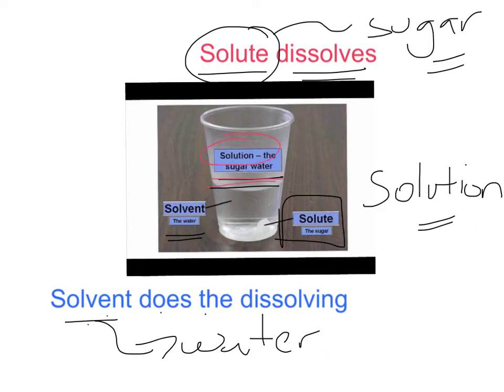So a solute dissolves if it's put into a solvent, so sugar dissolves if it's put into water and that creates a solution, which is a mixture between a solute and a solvent. So just be aware that a solute dissolves if we put it into a solvent.